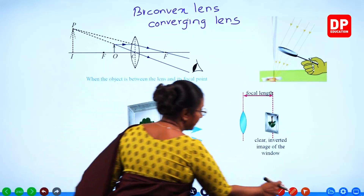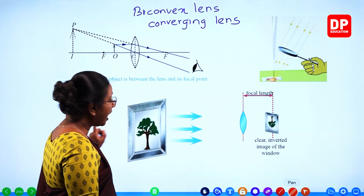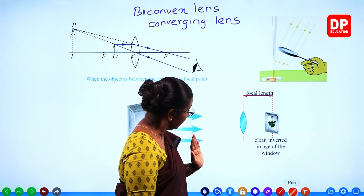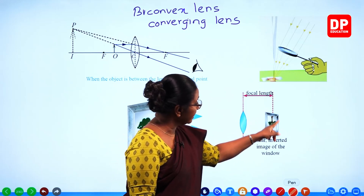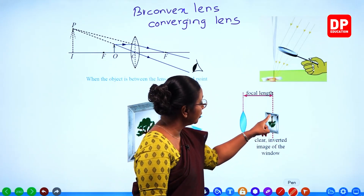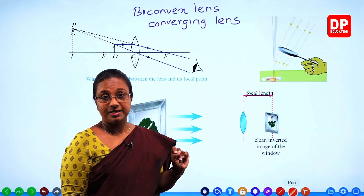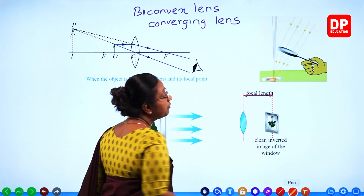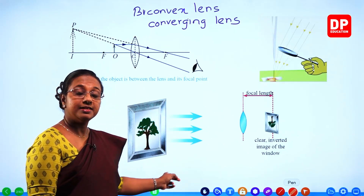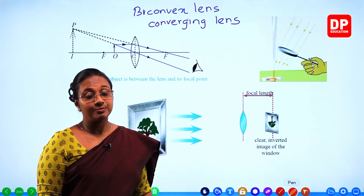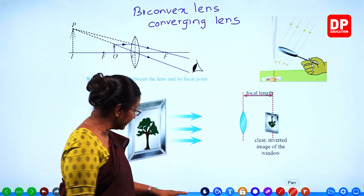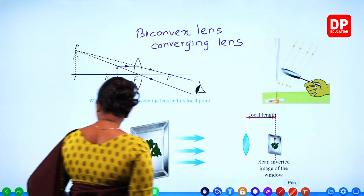In the third diagram — Activity 3 — there is a distant object, a tree outside the window. If you use a biconvex lens to observe it, you will get an image on the screen. The image will be clear, inverted, and smaller than the object — a diminished image. That image forms on the focal point. The distance between the lens and the image is the focal length. This is how we measure the focal length of a biconvex lens.